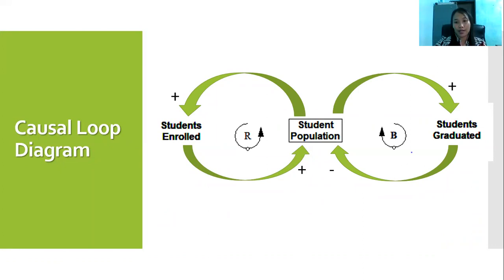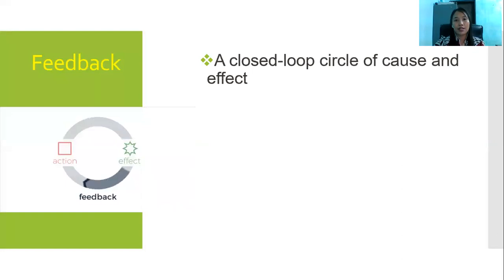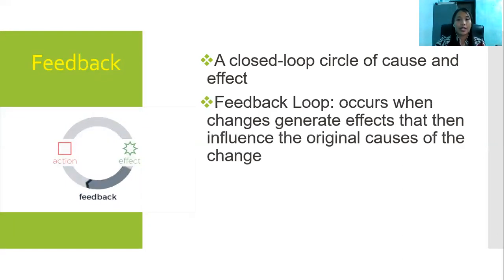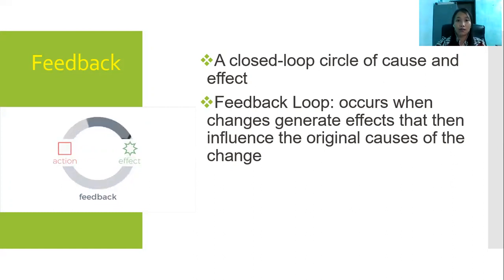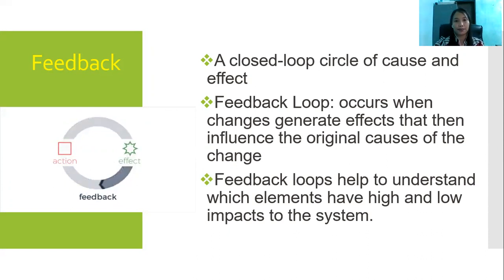Feedbacks are very important in having a causal diagram. Feedbacks are closed-loop circles of cause and effect — they occur when changes generate effects and then influence the original causes of the change. Feedback loops help us understand which elements have high and low impacts in the system.